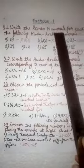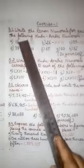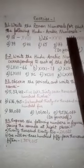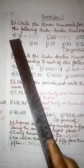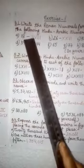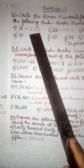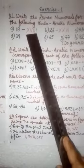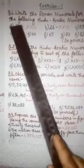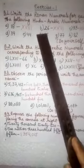Question number 1. Write the Roman numerals for each of the following Hindu Arabic numerals. First is 18. So, how to write 18?